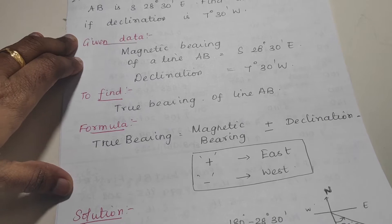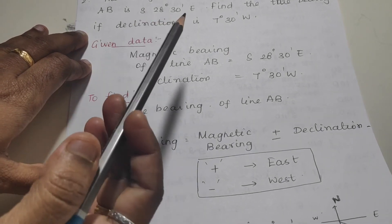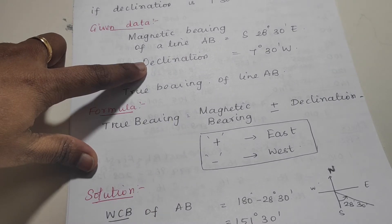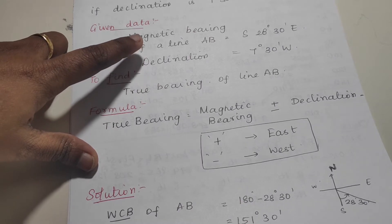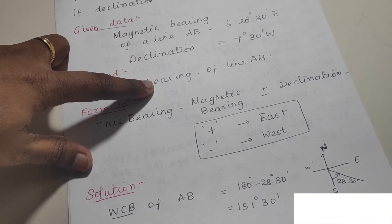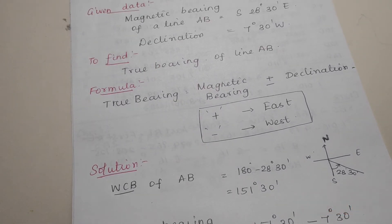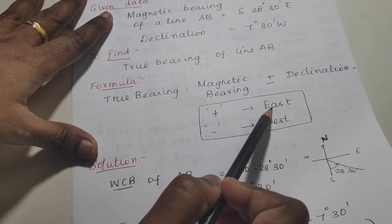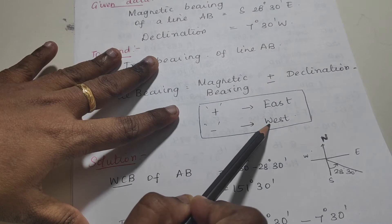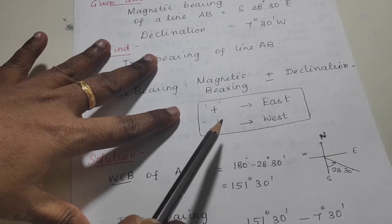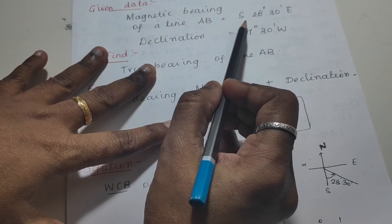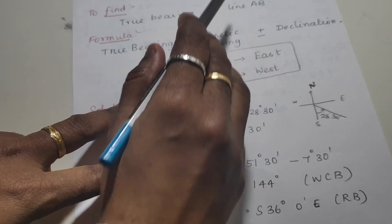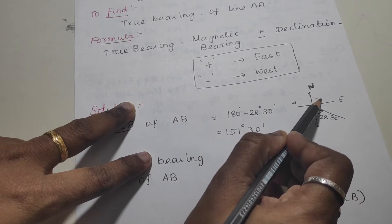Magnetic bearing and true bearing are related by declination. The formula is: true bearing equals magnetic bearing plus or minus declination. East declination is added and west declination is subtracted. The reduced bearing is converted to whole circle bearing. For example, whole circle bearing of line A is south-east 28 degrees.